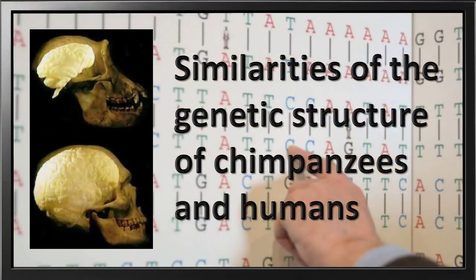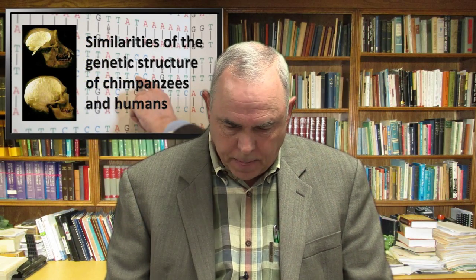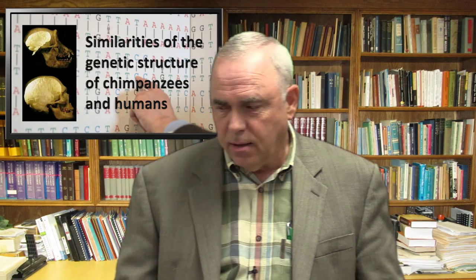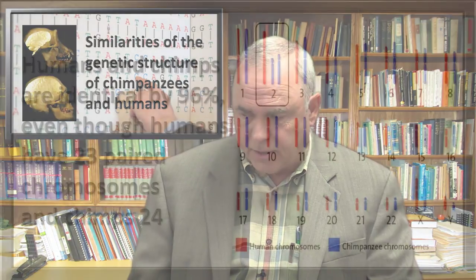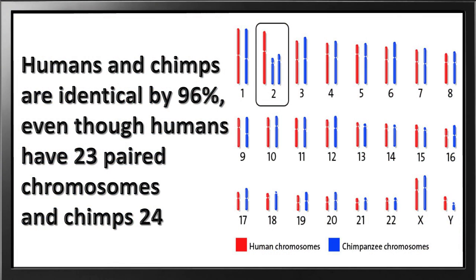Collins also looked at the similarity between chimps and humans and saw that we share about 96% of our DNA. That number varies — you'll see 91%, 98%, 96%, 94% depending on the source. But there's a close similarity no matter what number you use. The many genes in chimpanzees and apes that are similar to genes in humans were, for Francis Collins, another bit of evidence for evolution.